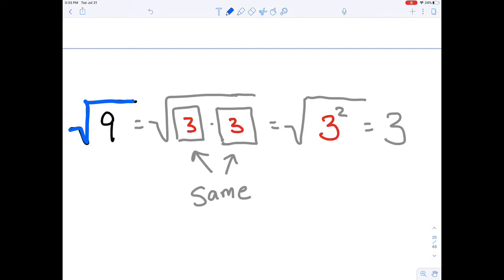The square root of 9 is asking what number times itself, these have to be the same, what number times itself equals 9? And since we know that 3 times 3 equals 9, we can write 3 squared in place of the number 9.